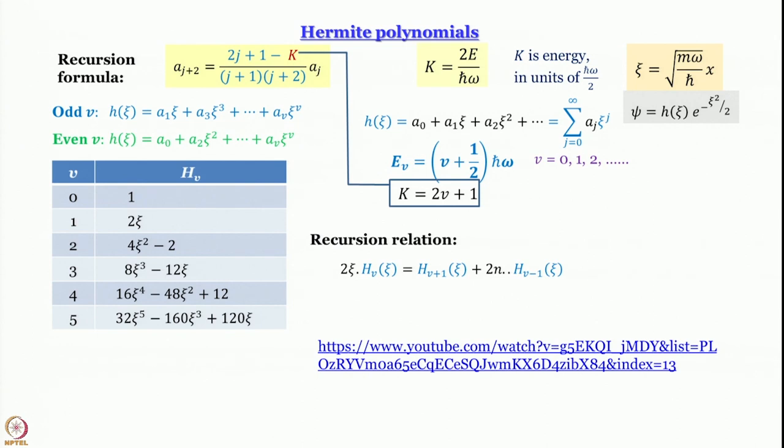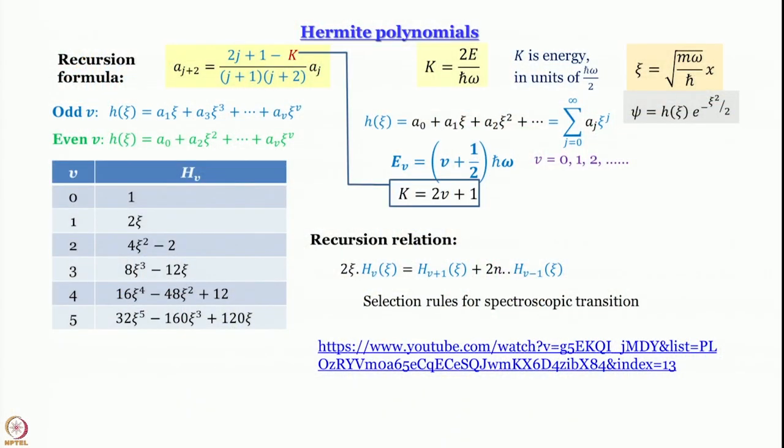This is a very important recursion relation of Hermite polynomials which obviously also relate the vibration of wave functions, and this is very handy in deriving the selection rule for spectroscopic transition for a harmonic oscillator. Well, the selection rule, as many of us might know for harmonic oscillator, is delta v equal to plus minus 1. You can only jump one step at a time.